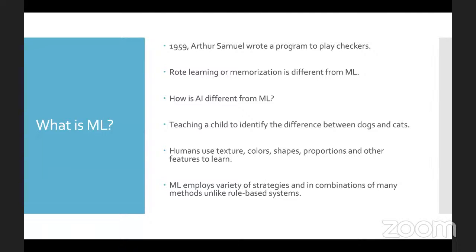Machine learning employs a variety of strategies. If images of dogs and cats are given to a model, it extracts information from each image and learns to classify them. Training on hundreds of thousands of photos, the model can then classify a new photo as a dog or a cat based on what it has learned. The model is not always right — there is always a possibility of predicting wrong results — and one has to account for that.